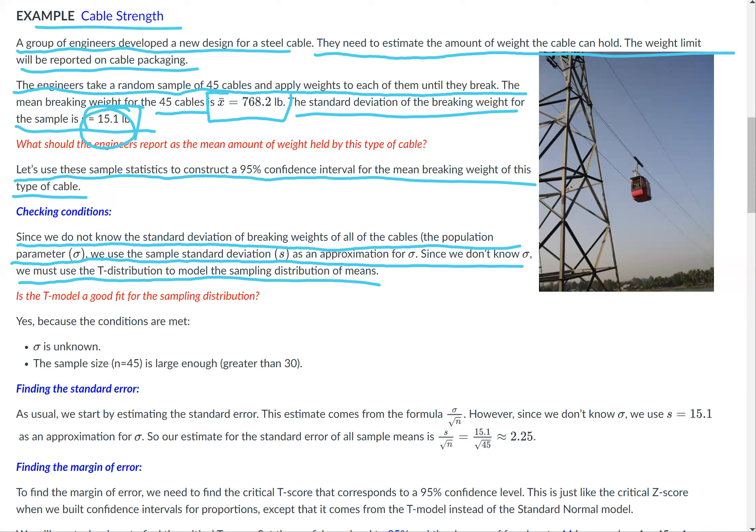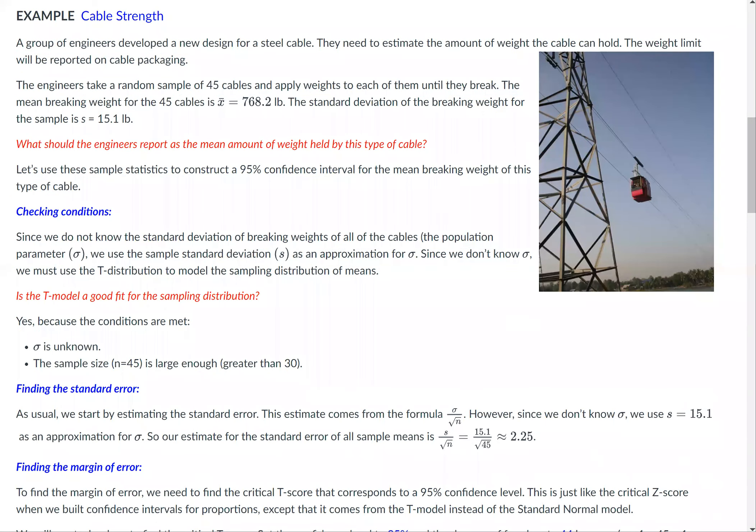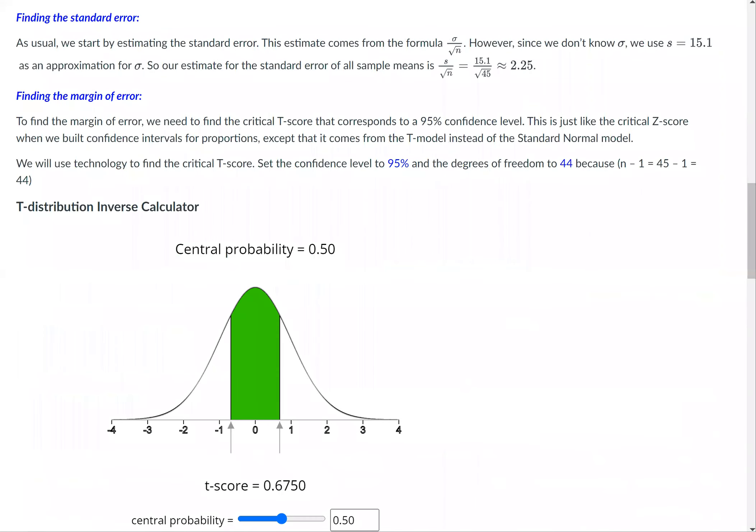Is the t-model a good fit for the sampling distribution? Yes, because the conditions are met. First, σ is unknown. Check. Sample size n equals 45 is large enough, greater than 30. Check.